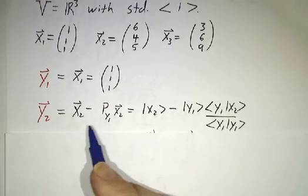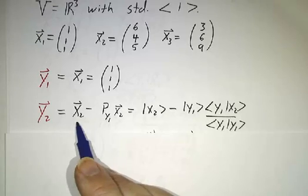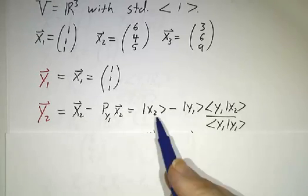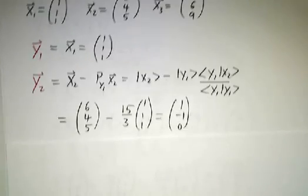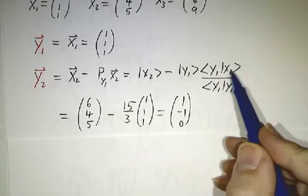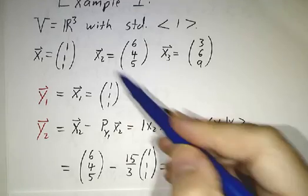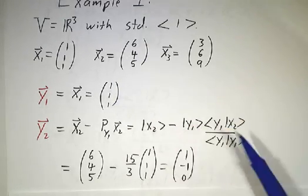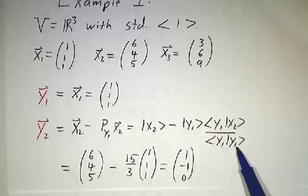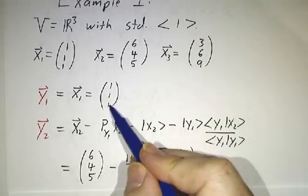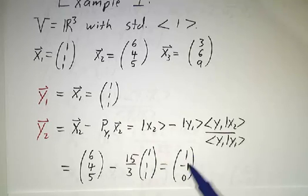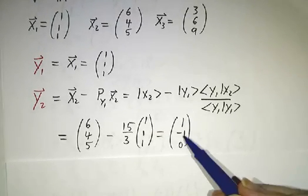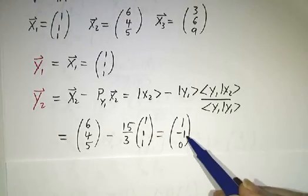So y2 is the orthogonal part of x2, so that's x2 minus the projection onto y1. So it's x2 minus y1 times this inner product divided by that inner product. So it's (6, 4, 5) minus, let's see, inner product of y1 with x2 is 6 plus 4 plus 5, that's 15. Divided by the inner product of y1 with itself, that's 1 plus 1 plus 1, that's 3. So we want to subtract off 15 thirds of (1, 1, 1), that's (5, 5, 5). Subtract that off and you get (1, -1, 0). So y2 is (1, -1, 0). And it's easy to see that that is in fact orthogonal to y1.